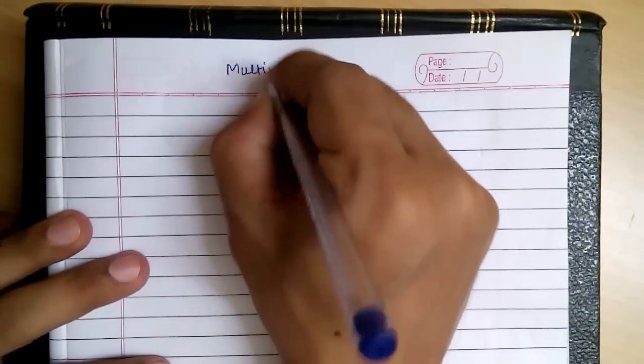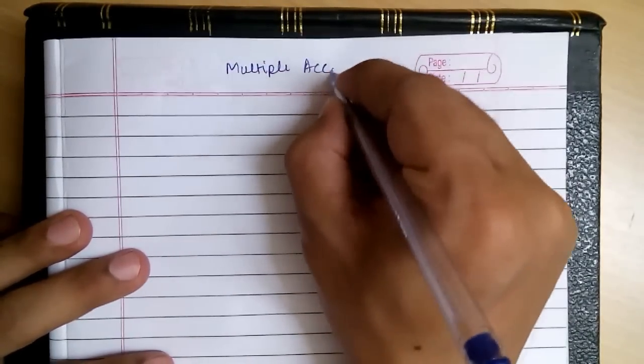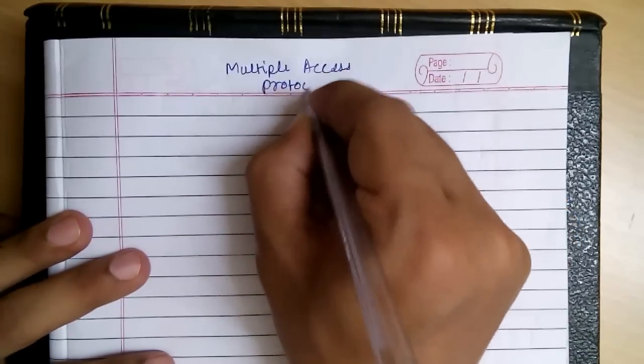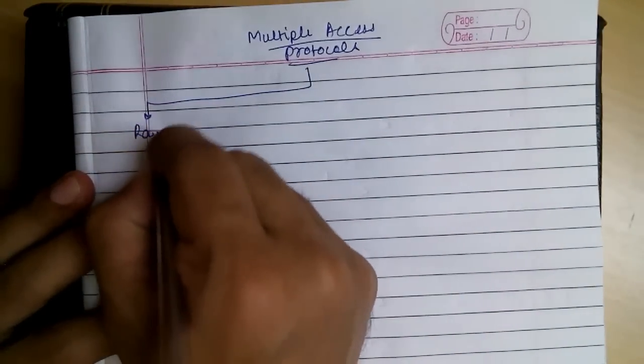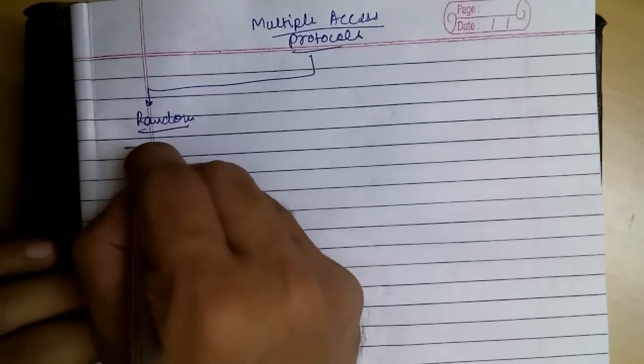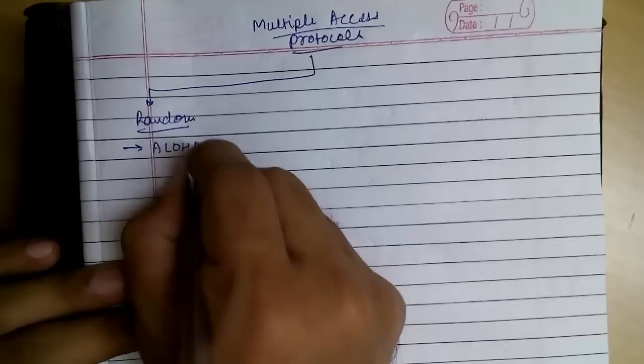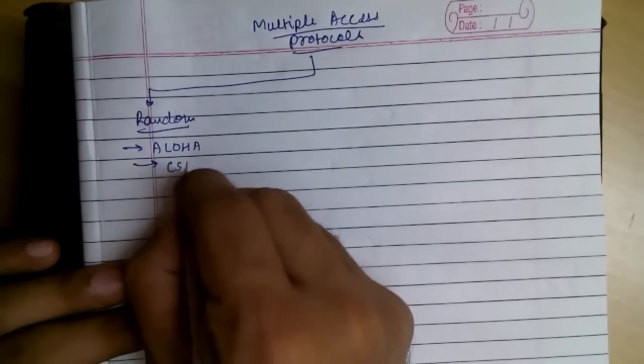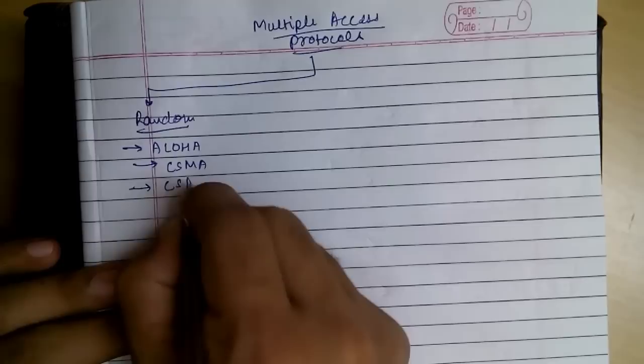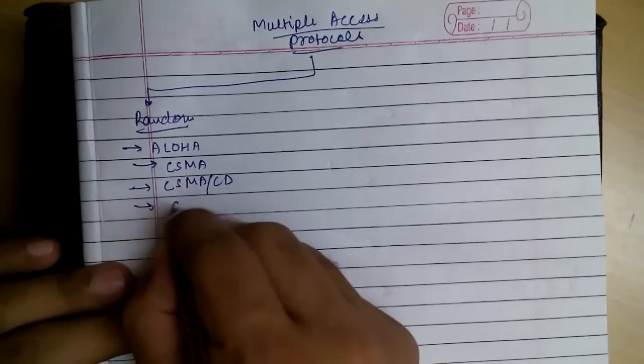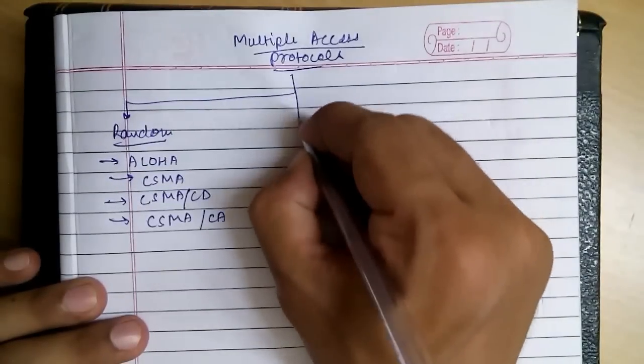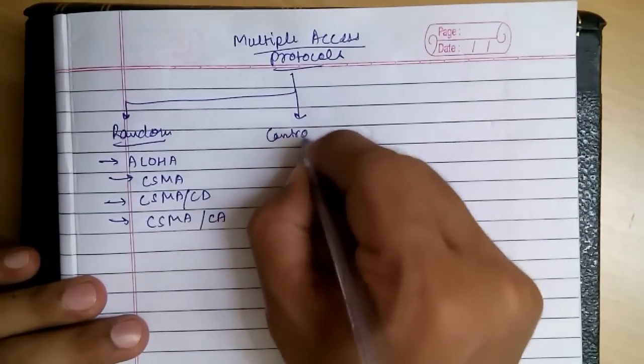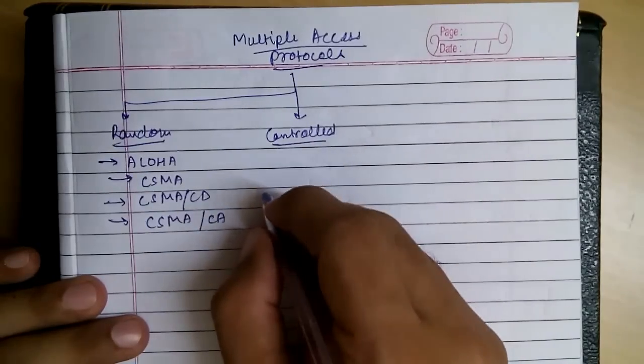There are three types of categories in multiple access. The first one is random. The protocols in this category are ALOHA, CSMA, CSMA/CD, and CSMA/CA.